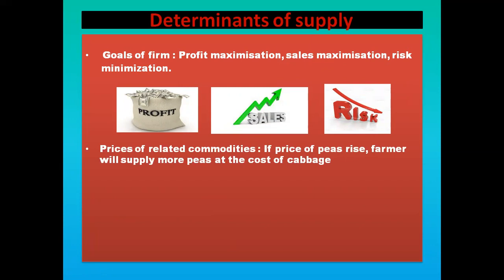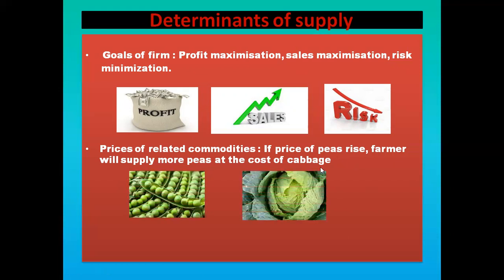Next is prices of related commodities. Producers always have the possibility of shifting from the production of one commodity to another. If prices of other commodities are rising while the price of the commodity under question remains constant, producers will find it more profitable to produce and sell the other commodities. For example, a farmer can grow various vegetables on a given piece of land. If the price of peas rises, farmers will supply more peas rather than cabbage — they will shift from cabbage to peas. So prices of related commodities also affects supply, and peas supply will increase.